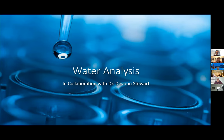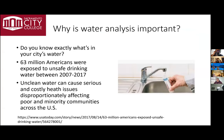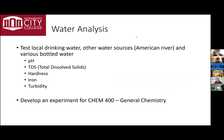Another research project, in collaboration with Dr. Stewart, is water analysis. Water analysis is really important — we need to know what is in our drinking water and other sources. 63 million Americans were exposed to unsafe drinking water, and unclean water can cause serious and costly issues, disproportionately affecting poor and minority communities. I want to test local drinking water, other resources like the American River, and various bottled water, looking for pH, total dissolved solids, hardness, and iron. I'm also wanting to develop a lab for our general chemistry class.